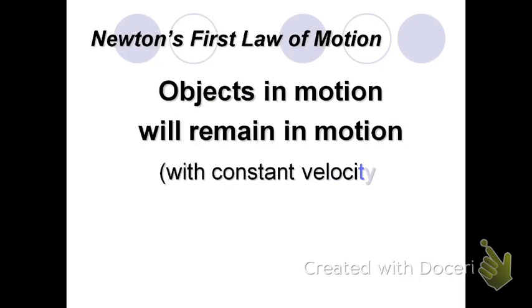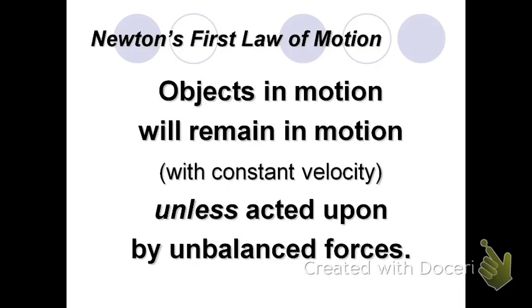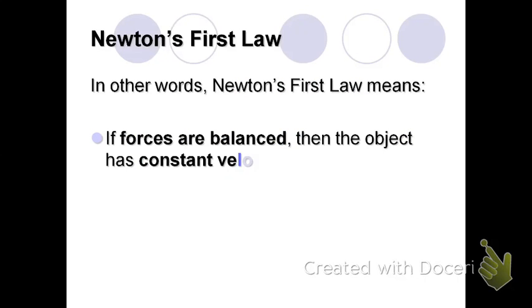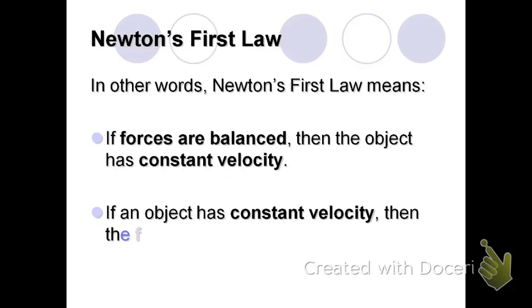Newton's first law of motion. Objects in motion will remain in motion with constant velocity unless acted on by unbalanced forces. What that really means is that if we have forces that are balanced, we know that the motion is going to be constant velocity. And if we have constant velocity, we know that the forces acting on it must be balanced.